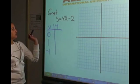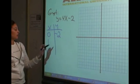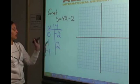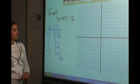0 times 4 is 0, minus 2 gives us negative 2. 1 times 4 is 4, minus 2 is 2. And negative 1 times 4 is negative 4, minus 2 is negative 6.